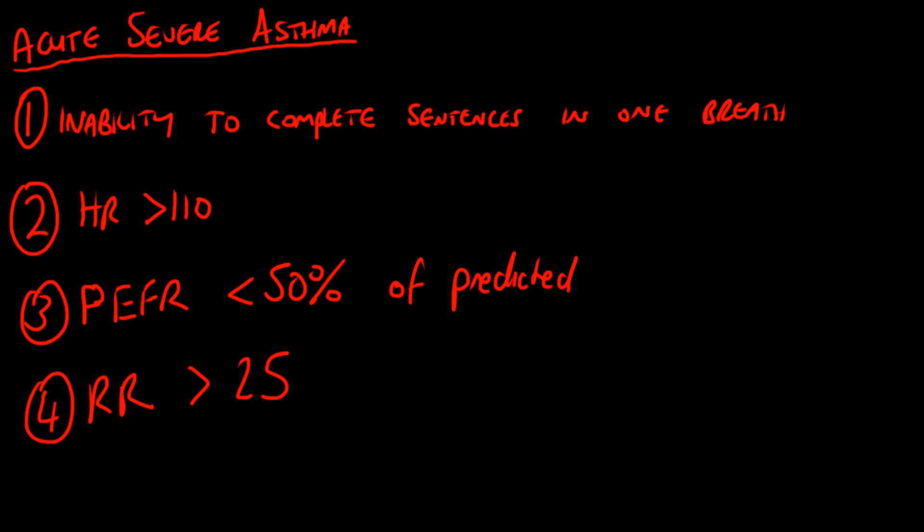Asthma comes up all the time in finals. Acute severe asthma is characterized by the inability to complete sentences in one breath, a heart rate greater than 110, a peak expiratory flow rate of less than 50% of predicted.